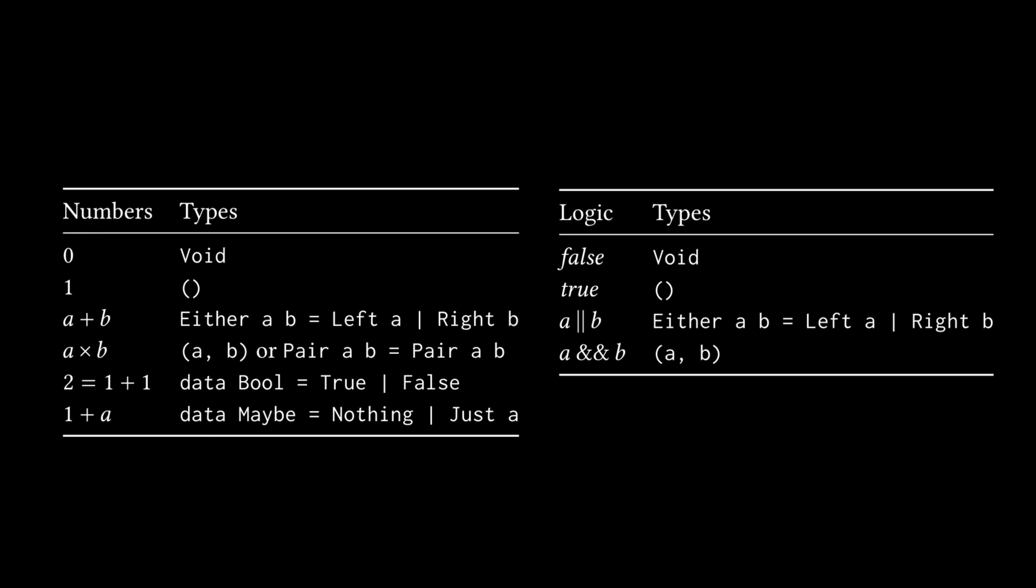The part that I wanted to highlight from this subsection was the following. It's these two tables that show the relationship between natural numbers and types and logic and types. And I'm not going to go into this in detail. But I think it is super interesting to sort of look at this and ponder about it. The logic and types one, I think makes a lot of sense with false and true respectively mapping to void and the unit type and then the logical or and logical and mapping to sort of an either sum type or a product type that is a pair of A and B.